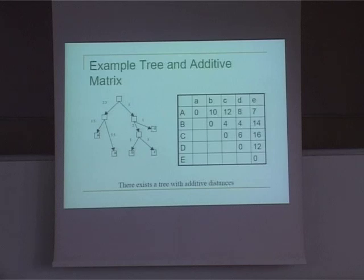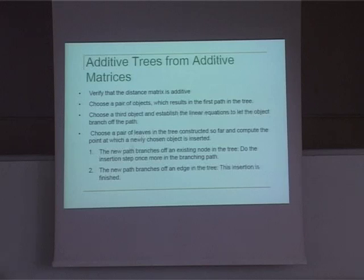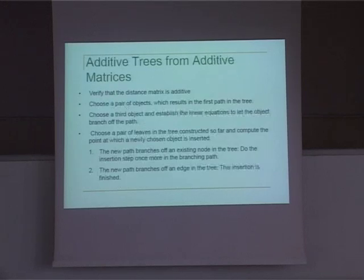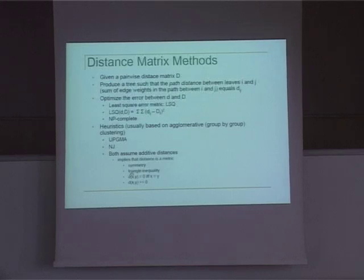If we have additive distances, here is a simple algorithm to construct the corresponding tree. First, verify that your distance matrix is additive by checking the constraints: it must be a metric distance, symmetric, and satisfy the triangular inequality — meaning the distance C must be greater than |A − B|. The distance should be zero only if two species are equal, different species should not have zero distance, and the distance must always be positive.